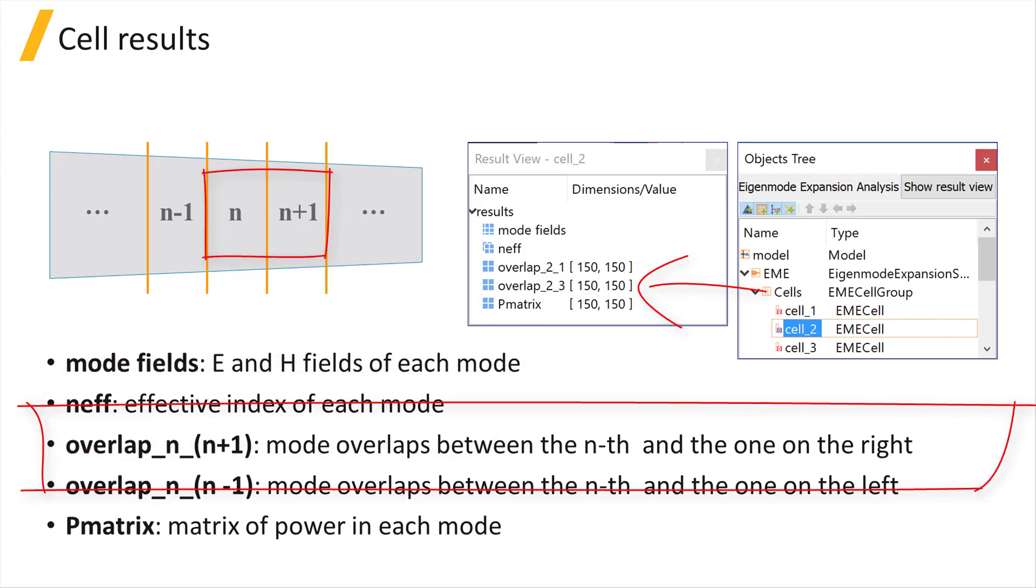Overlap_n_(n+1), which is the matrix of mode overlaps between the nth cell and the one on the right.